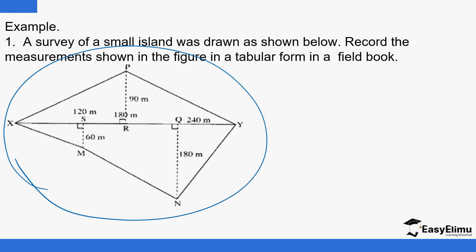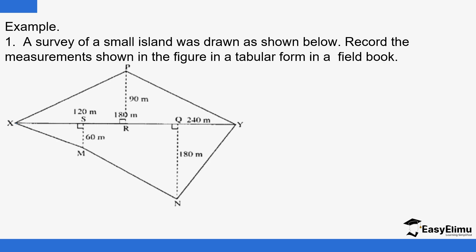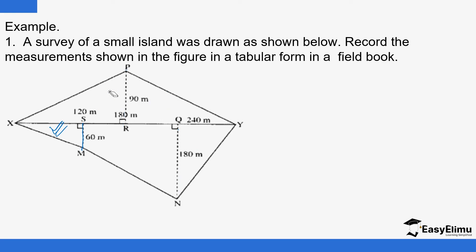Supposedly this is the whole area — this whole piece. You draw the baseline X-Y, then you draw these offsets. The offsets divide the space into a given number of figures. You can see we have a trapezium, triangles — so if you want to know the size, you find the area of each figure: the triangle, the trapezium, and the other triangles. Then you add all the areas together to give you the total area of the piece of land.